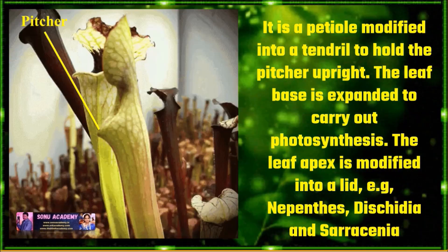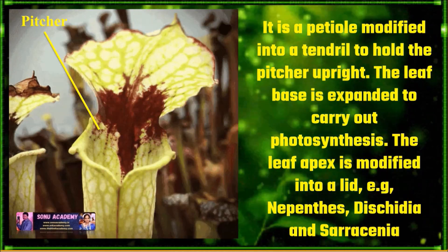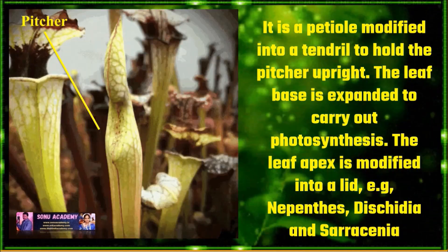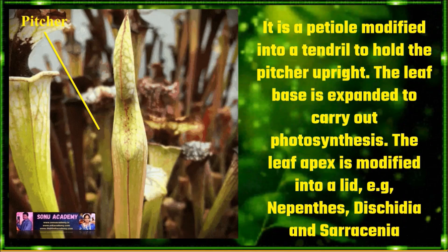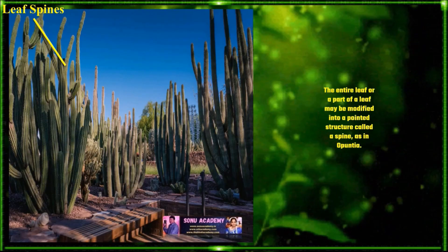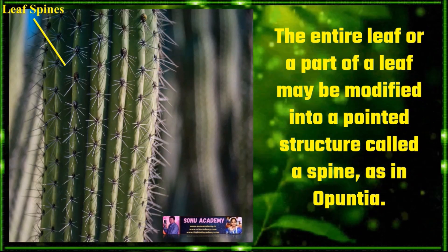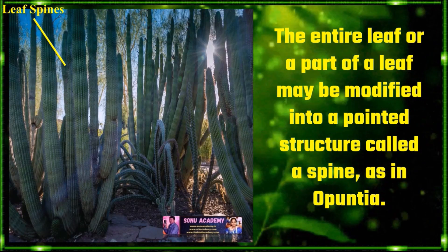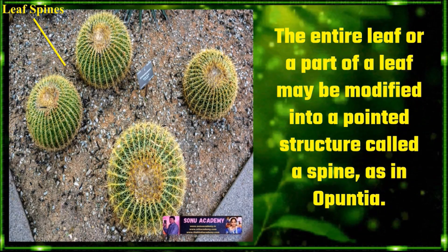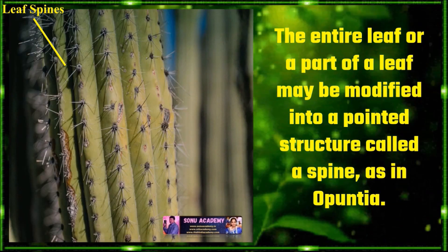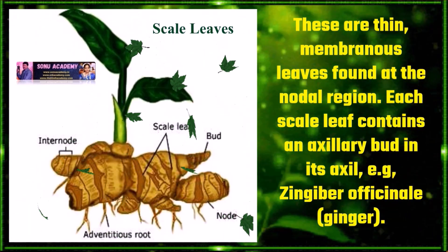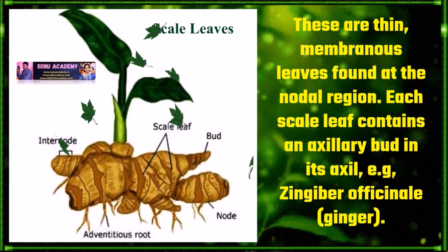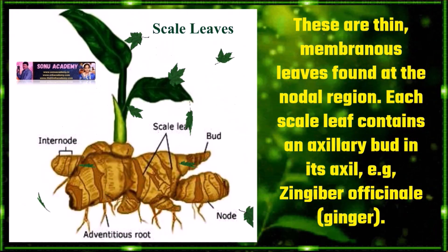Pitcher: it is a petiole modified into a tendril to hold the pitcher upright. The leaf blade is expanded to carry out photosynthesis and the leaf apex is modified into a lid. Example: Nepenthes, Dischidia, etc. Leaf spines: the entire leaf or a part of a leaf may be modified into a pointed structure called a spine. Examples can be seen in opuntia plants. Leaf scales: these are thin membranous leaves formed at the nodal region. Each scale leaf contains an axillary bud in its axil. Example: ginger.